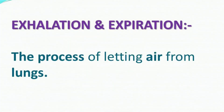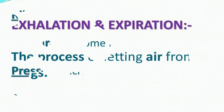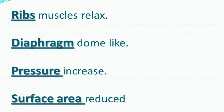अजीज तलबा, next हमारे पास पॉइंट है Exhalation और Expiration। इसकी definition: the process of letting air out from lungs। Lungs से हवा किस तरह exit होती है — इसमें steps हैं: Number 1: Ribs Muscle Relax। Number 2: Diaphragm Dome-like। Number 3: Pressure Increase। Number 4: Surface Area Reduces।